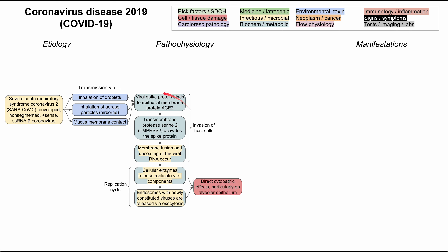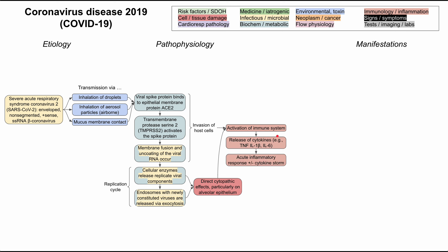There are a couple of ways this damages the host. First, the replication cycle itself can be directly cytopathic and cytotoxic, particularly on the alveolar epithelium — taking over a host cell and using its machinery to make viral particles is quite damaging. In addition, this invasion and direct cytotoxic effect both activate the immune system, leading to a release of cytokines including TNF, IL-1β, and IL-6, causing an acute inflammatory response and, in severe cases, a cytokine storm.